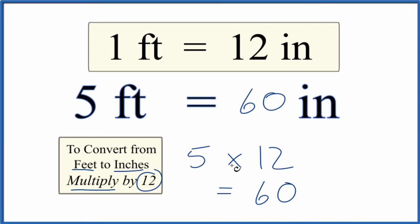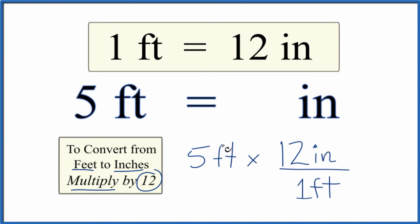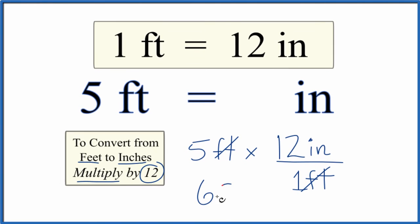Let's do this one more time with the units written in. We multiply our 5 feet times 12, and that's 12 inches. There are 12 inches in one foot. So when we multiply, feet on the top and bottom cancel, and we end up with 5 times 12 inches, and that is 60 inches.